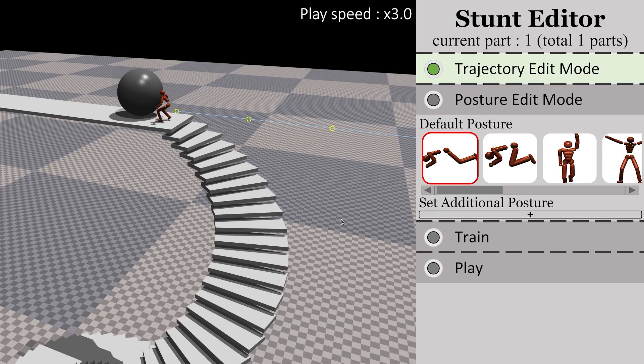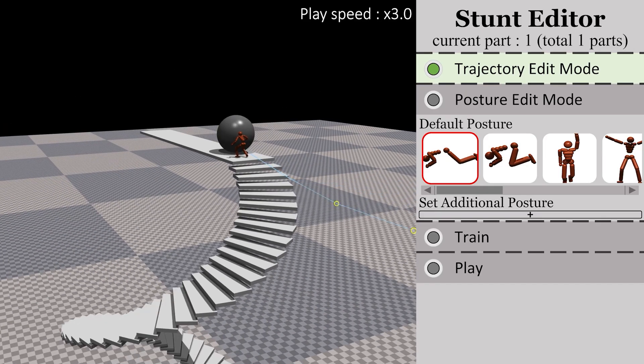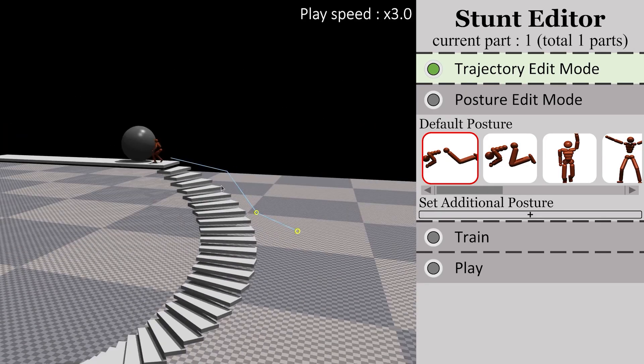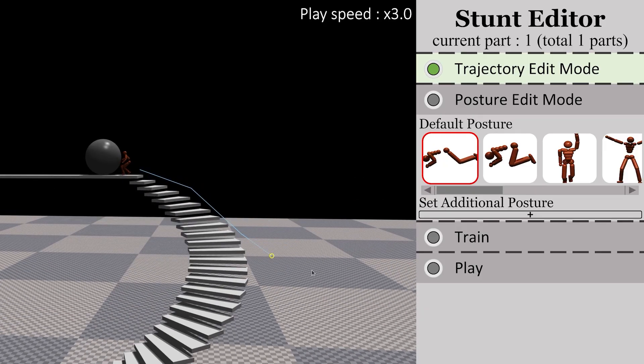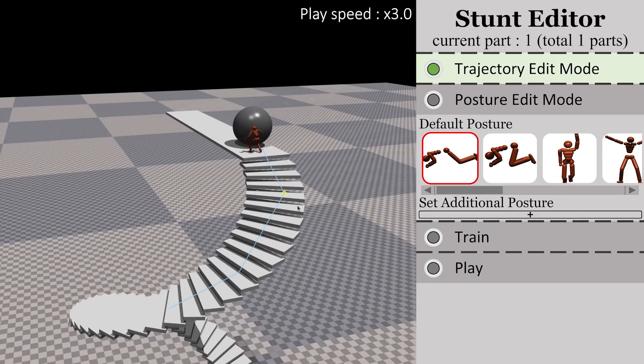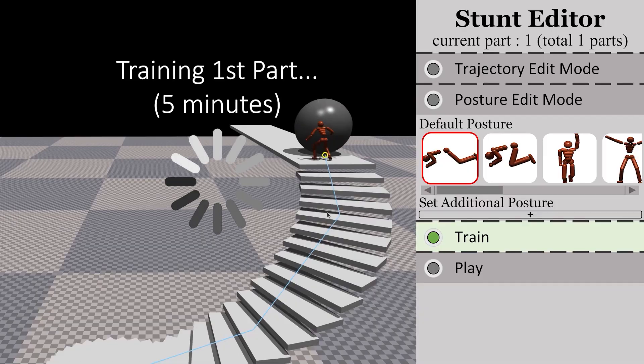First, we edit the trajectory that the stunt actor will follow during the ballistic action, as well as the default posture the actor will hold throughout the action. Once the editing is complete, VISA trains the controller to ensure that the stunt actor can accurately follow the specified trajectory.